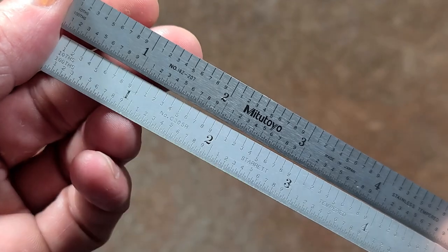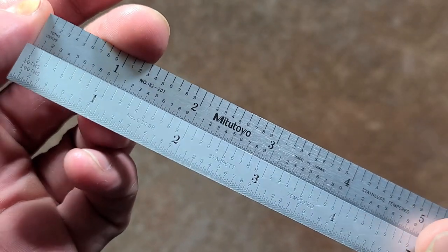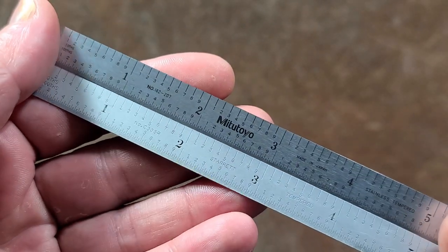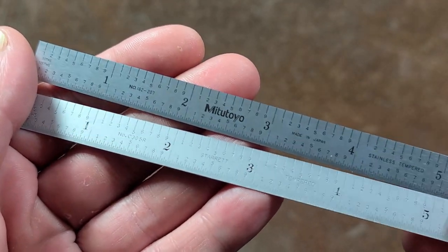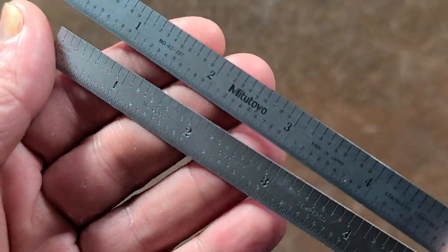I kind of like a mix of both of these scales, mainly because I like the way the Mitutoyo is dual reading, and I do like the deep black printing on the Mitutoyo. To tell you the truth, it kind of depends on the situation.